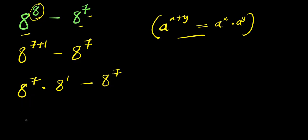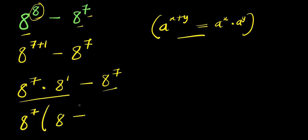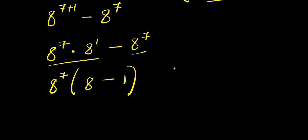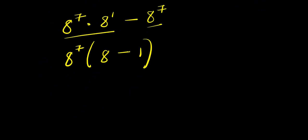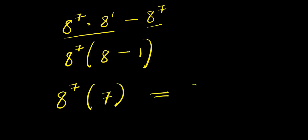We factor out 8 to the power of 7. This gives us 8 to the power of 7 times 8 minus 1, which equals 8 to the power of 7 times 1 — wait, that is 8 minus 1 equals 7. So it is just like writing 8 to the power of 7 times 7.